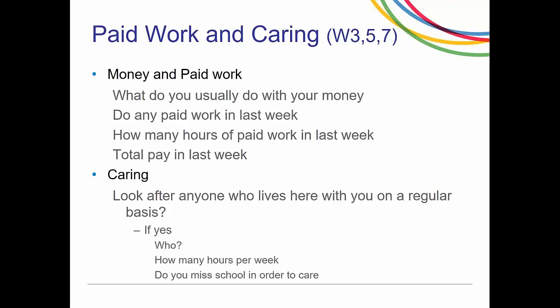The next set of questions started in Wave 3 and continues in odd wave years: questions regarding money and paid work. What do they usually do with their money — any money given to them or money they earn? They are asked whether they did any paid work in the last week, how many hours, and their total pay. There are also questions surrounding caring: whether they look after anyone in the household on a regular basis, and if so who — parent, sibling, grandparents, etc. — how many hours per week they care for that person, and whether they miss school in order to care.